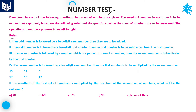In each of the following questions, two rows of numbers are given. The resultant number in each row is to be worked out separately, based on the following rules. The operations on the numbers progress from left to right — that is, from the left-hand side to the right-hand side.